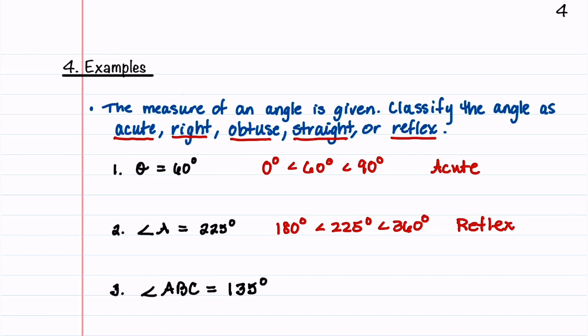The third one, angle ABC, is 135 degrees. So 135 degrees lies between 90 degrees and 180 degrees. And because of that, this angle is called an obtuse angle.